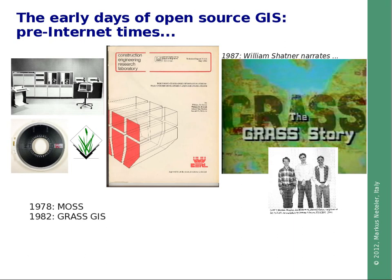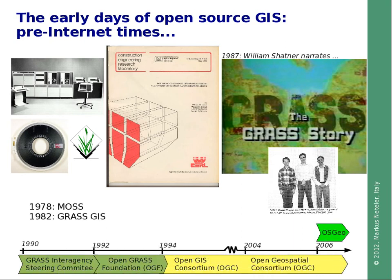Interestingly, if you look at the Open Geospatial Consortium history, you can see that it derived from the GRASS Interagency Steering Committee, which then turned into the Open GRASS Foundation. In 2006, the OSGEO — the Open Source Geospatial Foundation — was founded in order to provide an umbrella foundation for the various Open Source GIS projects out there.